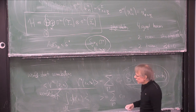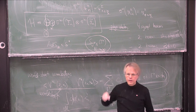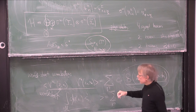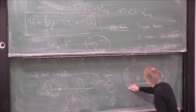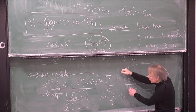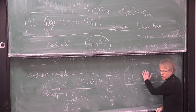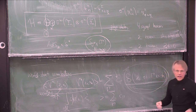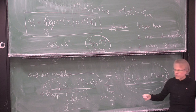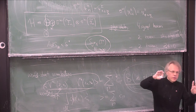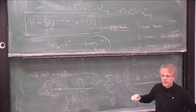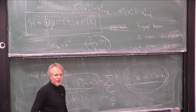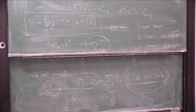So what I'm going to explain next time is that the Ward identities of our hybrid description prove that these correlation functions have this delta function localization behavior. I won't be able to calculate the coefficient, but I'll be able to show they have this localization. And with that I'm running a bit over time, so thank you.